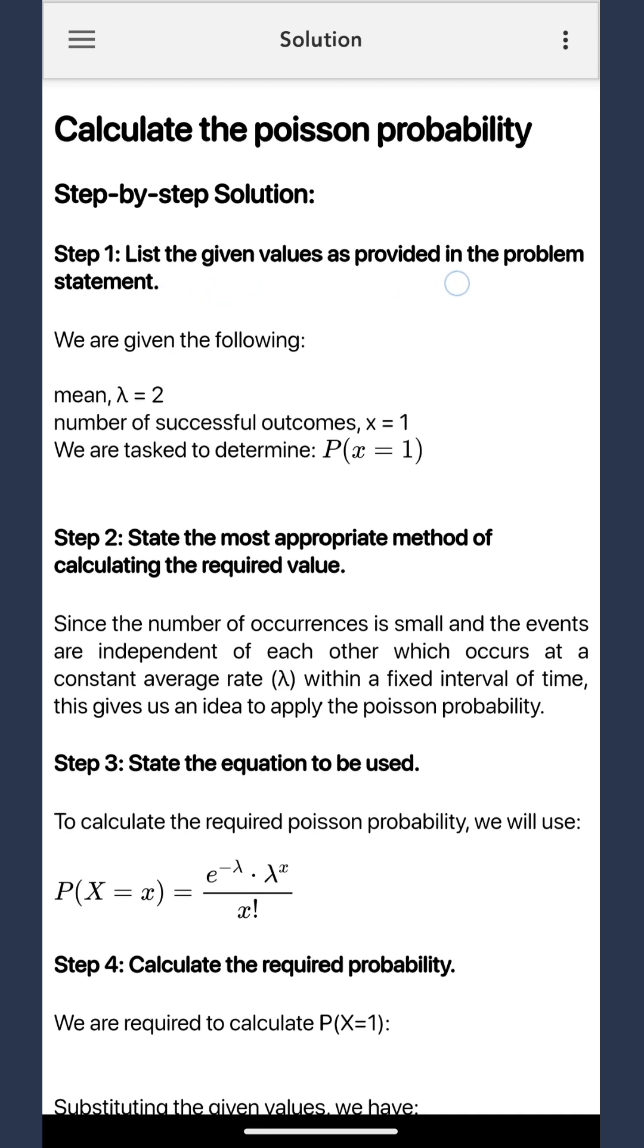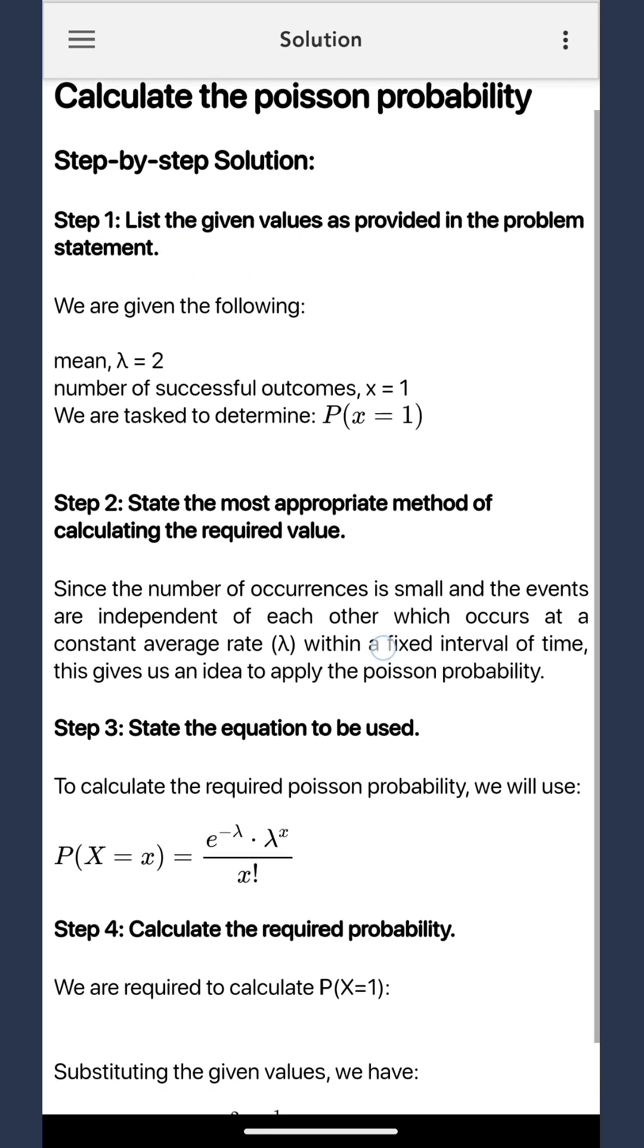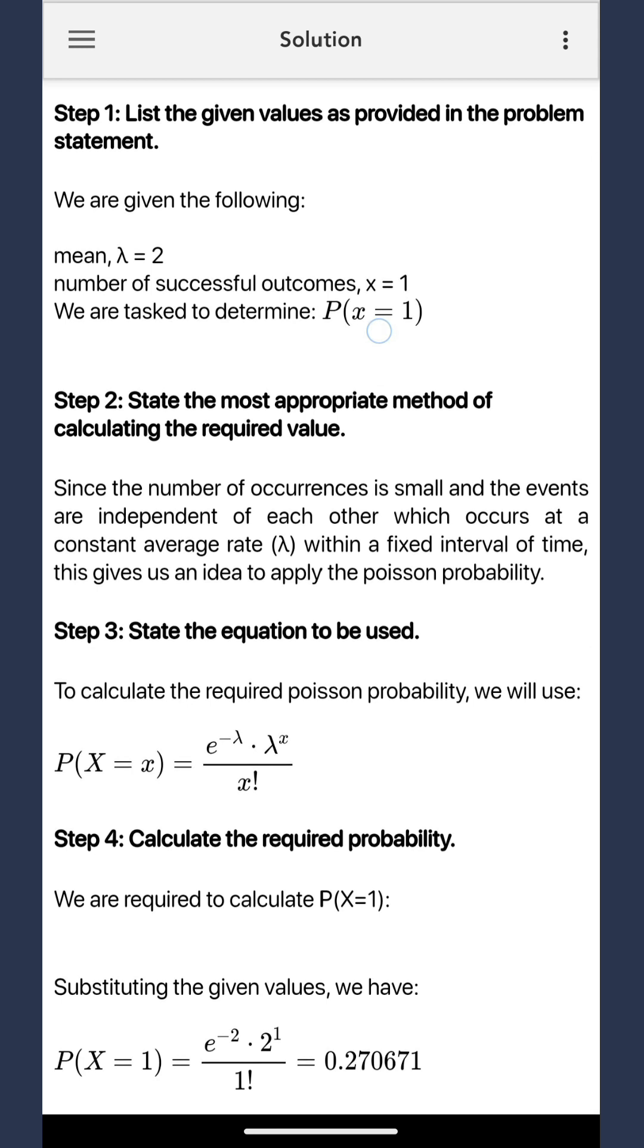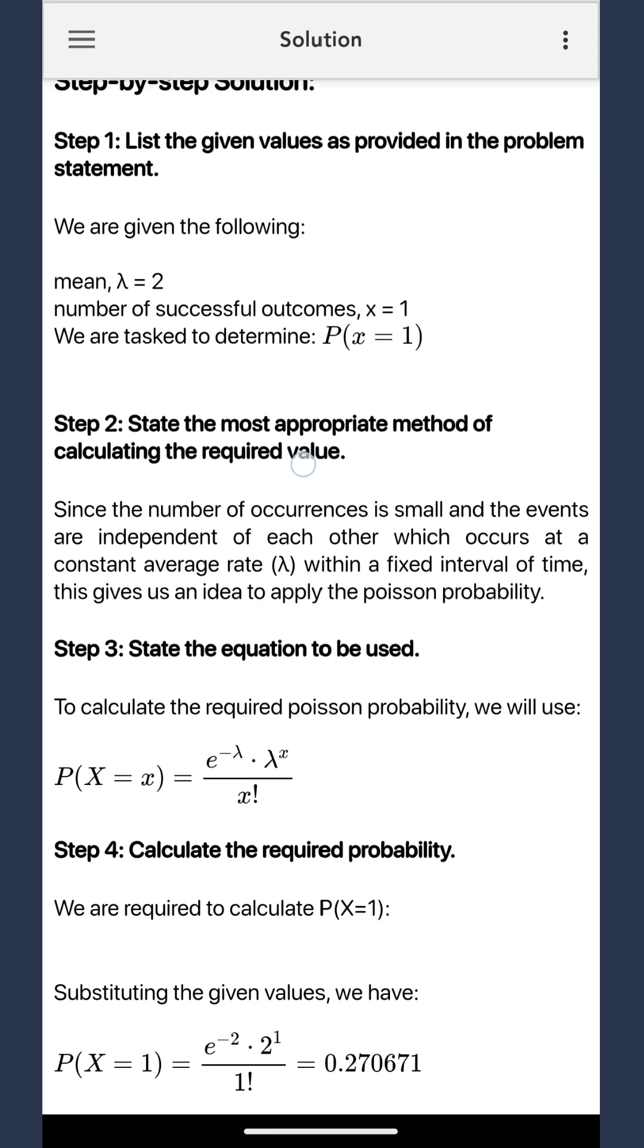First off, we list the given values. Next, we explain why we are using the Poisson probability method for this situation. Third, we state the equation that we will use in our calculation.